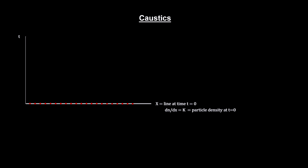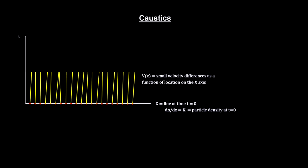Picture a set of uniformly distributed particles on a line, each with slightly different velocities. They start out with a uniform particle density.